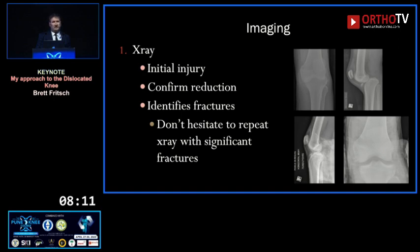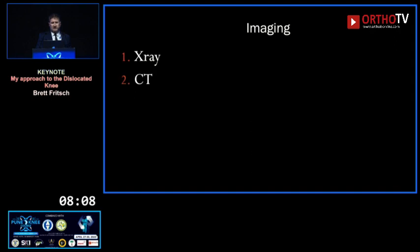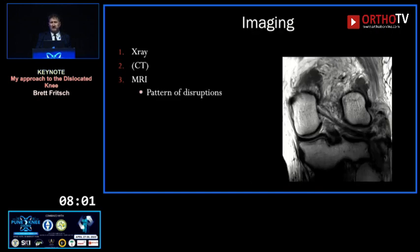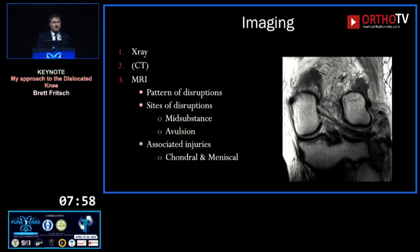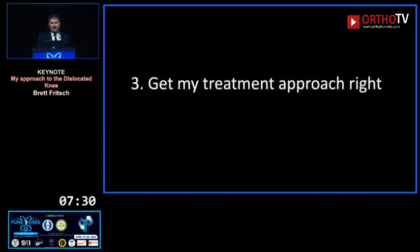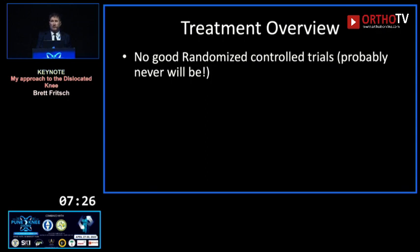X-rays confirm reduction and identify fractures — always repeat at 24 hours, especially with tibial plateau fractures as the medial plateau has a tendency to resublux. CT has a fairly limited role: it delineates specific fractures and CT angiogram. MRI is the workhorse — it shows the pattern of disruption, site of disruption, associated injuries, and guides surgery. Stress X-rays are mostly used in the chronic setting; the consensus is around 2mm of side-to-side opening to suspect isolated lateral collateral injury, more than 4mm for a higher-grade injury.